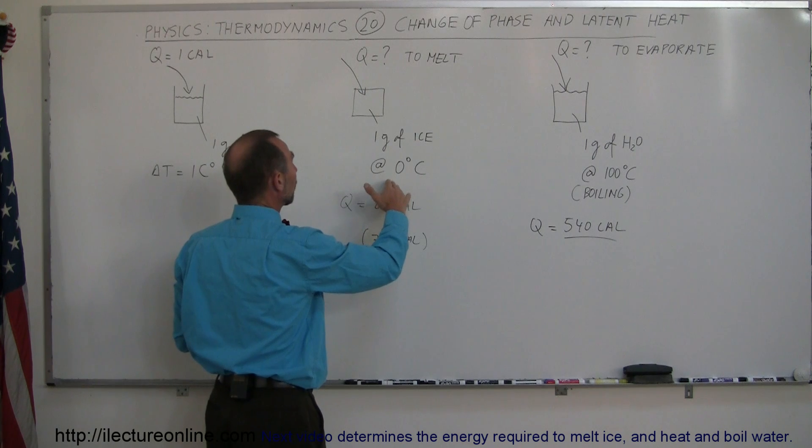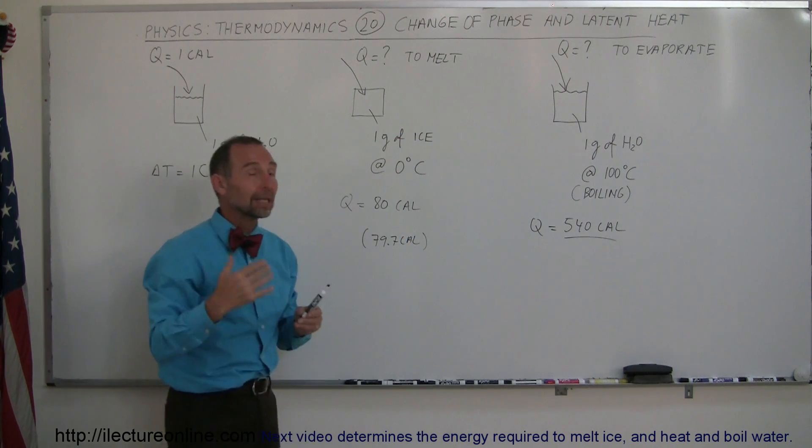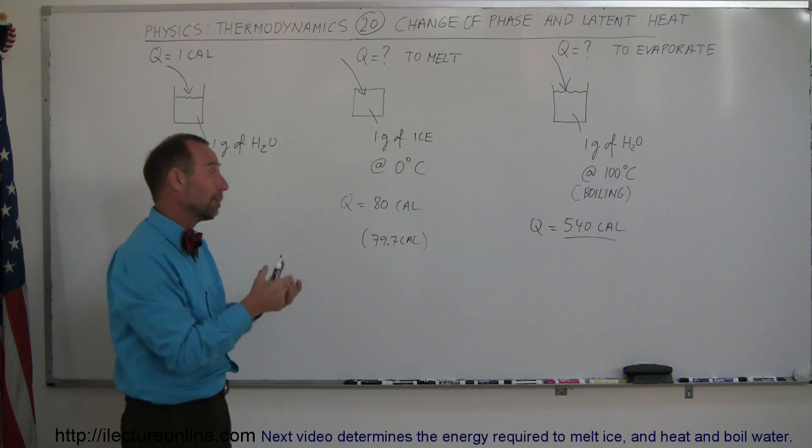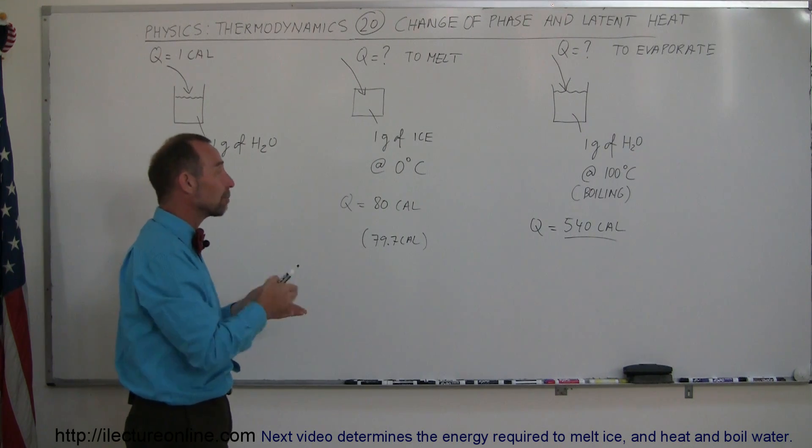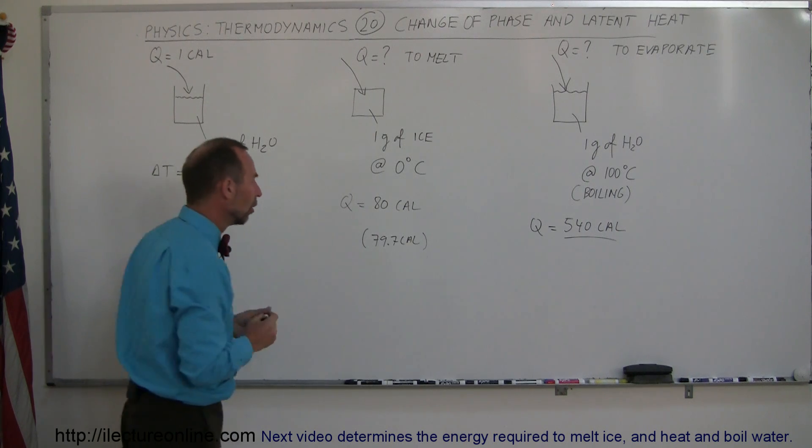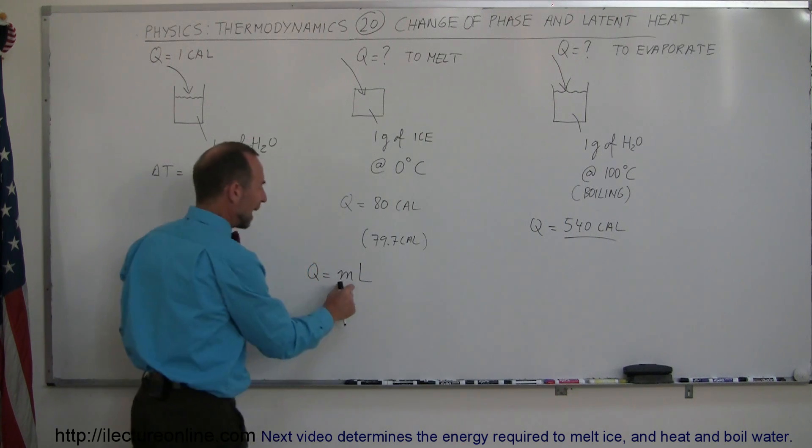It turns out the temperature doesn't change through the phase. When one gram of ice which started at zero degrees centigrade completely melts, that melted water will still be at zero degrees centigrade. There's no temperature change.